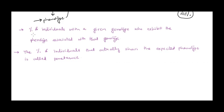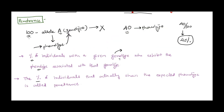So penetrance means the percentage of individuals with a given genotype who would actually show the phenotype associated with that particular genotype — the percentage of individuals actually showing the expected phenotype. Out of 100, all of them have genotype A, but all are not expressing it. Only 40 show the associated phenotype, so 40% is the penetrance.